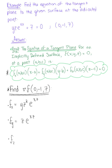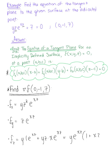Last but not least, we have the partial derivative with respect to z. Here we notice that we have two z's — the z in the front of our surface as well as the z in the exponent of our natural exponential — so we need a product rule. This will be y times 1 times the natural exponential raised to xz, plus yz multiplied by the derivative of the exponential, which is x times the natural exponential raised to xz.